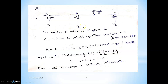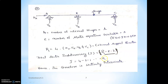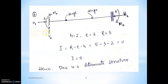First hinge example: a hinge support develops two reactions, Vb one reaction, Vc one reaction — total four external reactions. There is one internal hinge, and three equilibrium equations are available. Using the final equation I = r - e - h: 4 - 3 - 1 = 0. Hence the given structure is statically determinate.